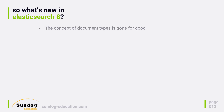For a while now, Elasticsearch has been deprecating the concept of document types. It used to be that in addition to documents and indices, there was something called a type that allowed you to associate different schemas with documents within the same index. They found this to be a bad idea conceptually. Some APIs that used to take a type name now take a generic type called underscore doc instead, and others just omit the type parameter entirely. Types have been deprecated since Elasticsearch 7, and in Elasticsearch 8 all vestigial uses and references have been scrubbed away. Types are gone for good now.